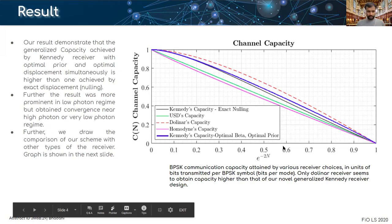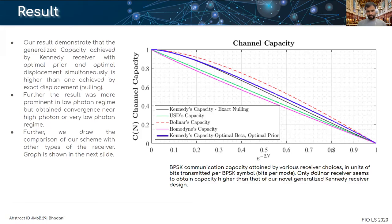Further we draw the comparison of our scheme with other types of receivers. The graph is shown here. The heterodyne receiver is higher while the homodyne receiver is the lowest.